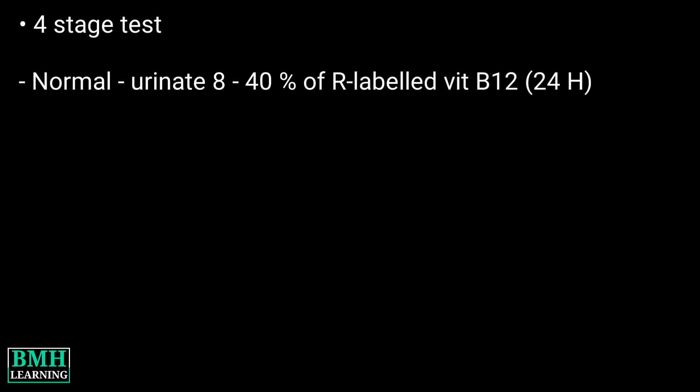Now the results and interpretation. The Schilling test has 4 stages. You have a normal test result if you urinate 8 to 40% of the radiolabelled vitamin B12 within 24 hours.